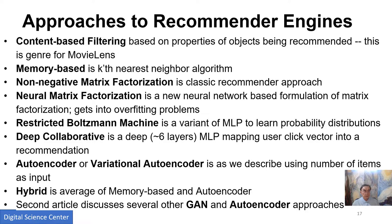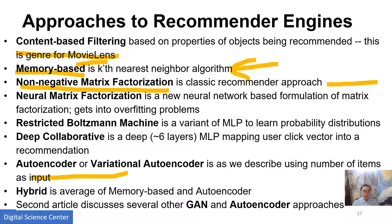Content-based filtering uses the nature of what you're trying to recommend to make the recommendation, but because you don't know a lot about the data in MovieLens, this is not very effective. The memory-based method is the K Nearest Neighbor algorithm described in detail in previous lectures. Non-negative matrix factorization is another classic method. We have a neural version of that which doesn't seem to work very well. Then we have various deep learning methods: restricted Boltzmann, deep collaborative, and autoencoder. Autoencoders are the most natural to use because they automatically learn efficient representations through dimensionality reduction. There's also a hybrid which averages the memory-based classical method and autoencoders, and a second article describing several other GAN and autoencoder approaches.